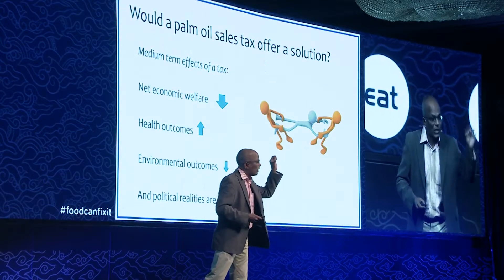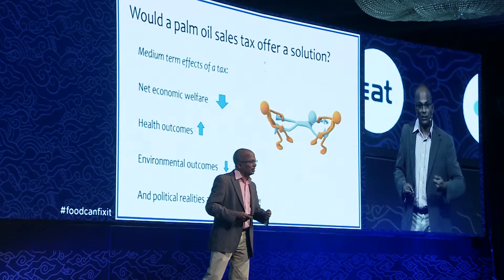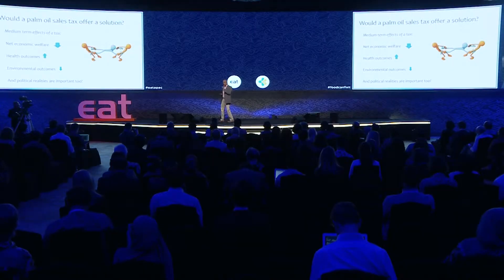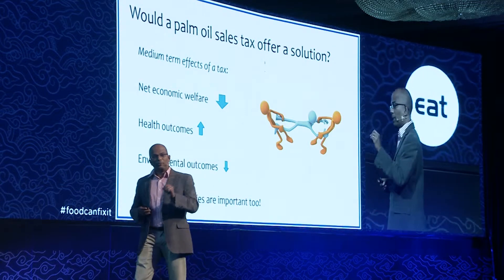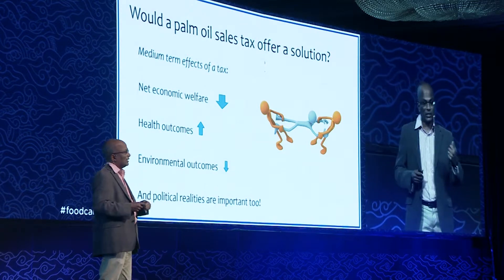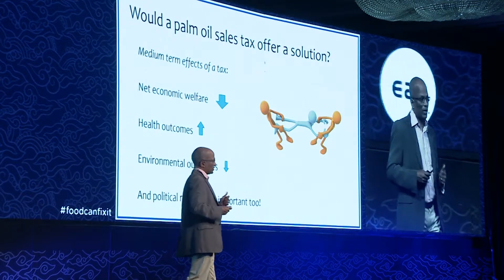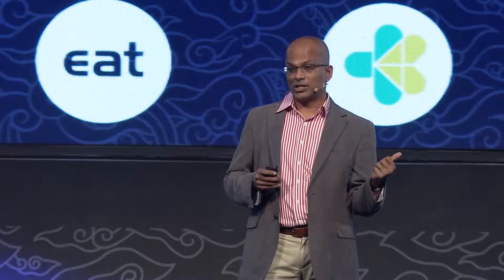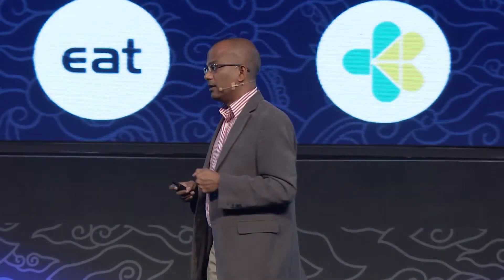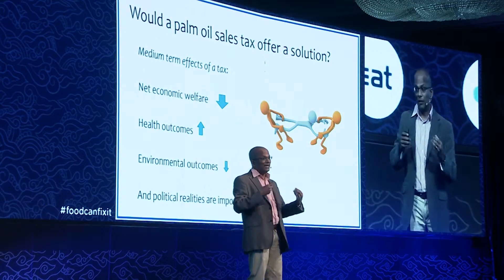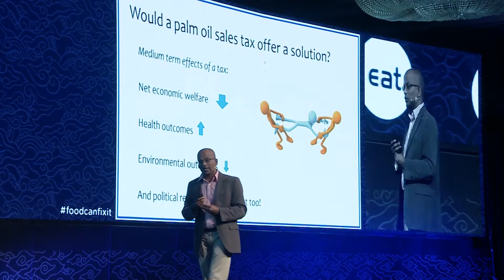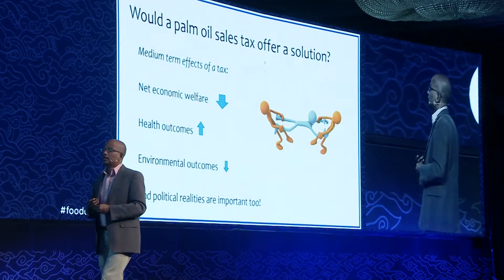The health outcomes, on the other hand, go up as cardiovascular health improves with the substitution in oils. Environmental outcomes — perhaps surprisingly — go down. This goes back to the fact that in Thailand, oil palm competes with agricultural land uses. If you tax it and disincentivize oil palm production, you substitute it with other crops which might actually sequester less carbon than oil palm. So the results are pulling in different directions, and you also have to ask whether there is political will to implement such a tax — these are some of the challenges.